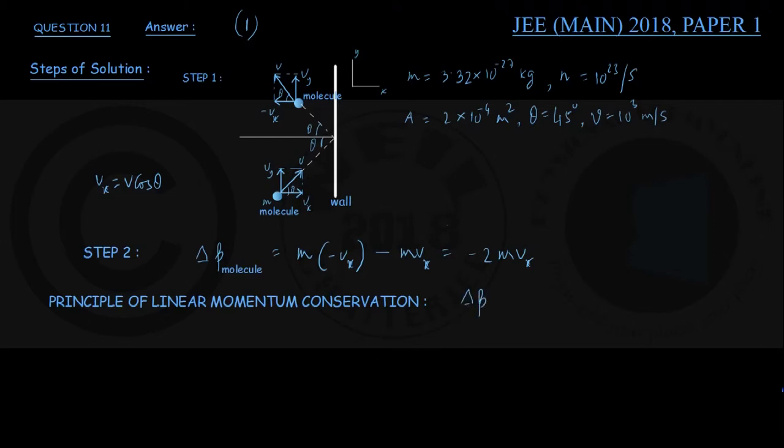...ΔP for the system - the system here is comprised of molecule and the wall - so this is the summation of momentum change of molecule and momentum change of the wall during the collision.